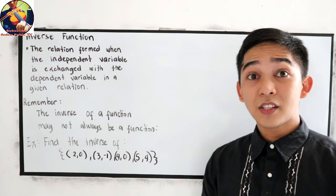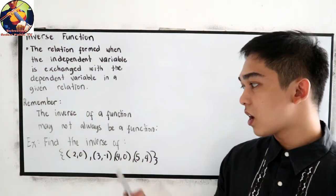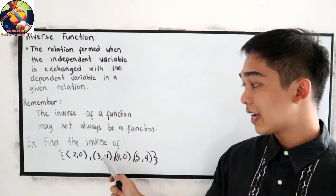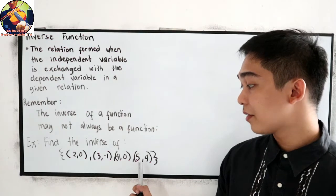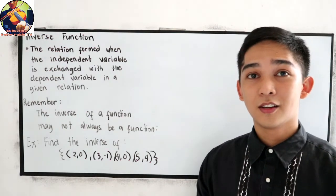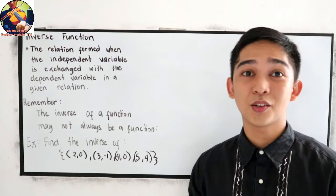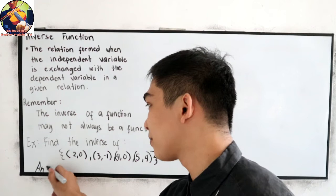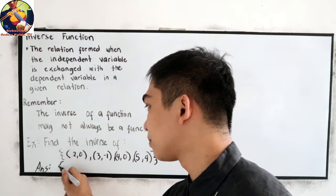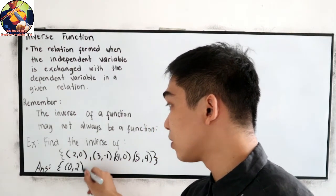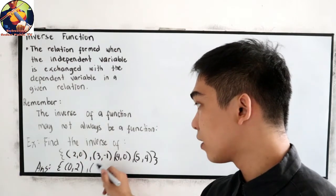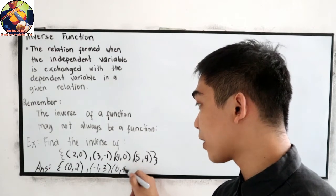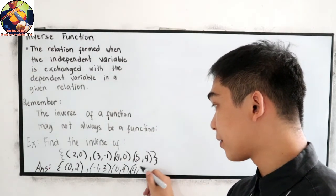Now let us have this example. Find the inverse of {(2,0), (3,-1), (4,0), (5,4)}. So let us just interchange the value of x to the value of y. So our answer is (0,2), just interchange, (-1,3), (0,4), and (4,5).